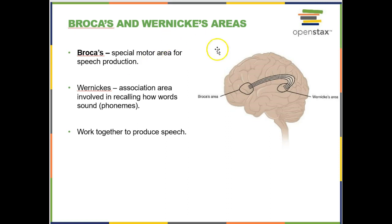Then you have Broca's area. As I understand it, Wernicke's area is more of an association area, but Broca's area is a special motor area that controls the muscles responsible for speech. It's hooked up to Wernicke's area because Wernicke's area is dedicated to understanding how words sound. Broca's area was originally thought to be a cognitive area, but it's actually a motor area — which means that just because you can't speak doesn't mean you don't understand language. It might just mean you don't have the motor skills to do it, but you still have the cognitive capacity to understand and use language.